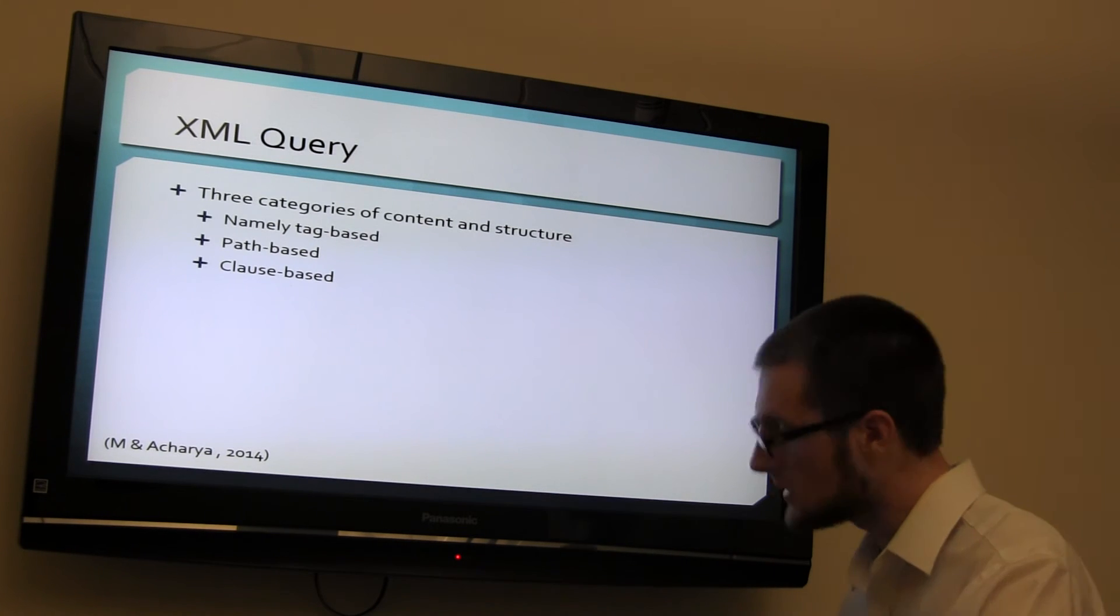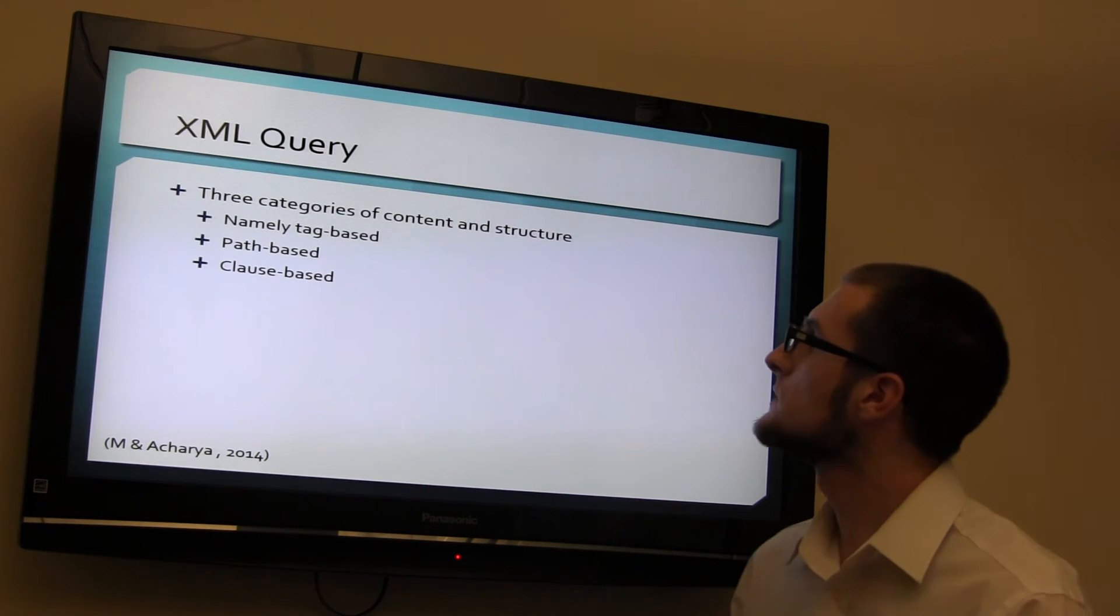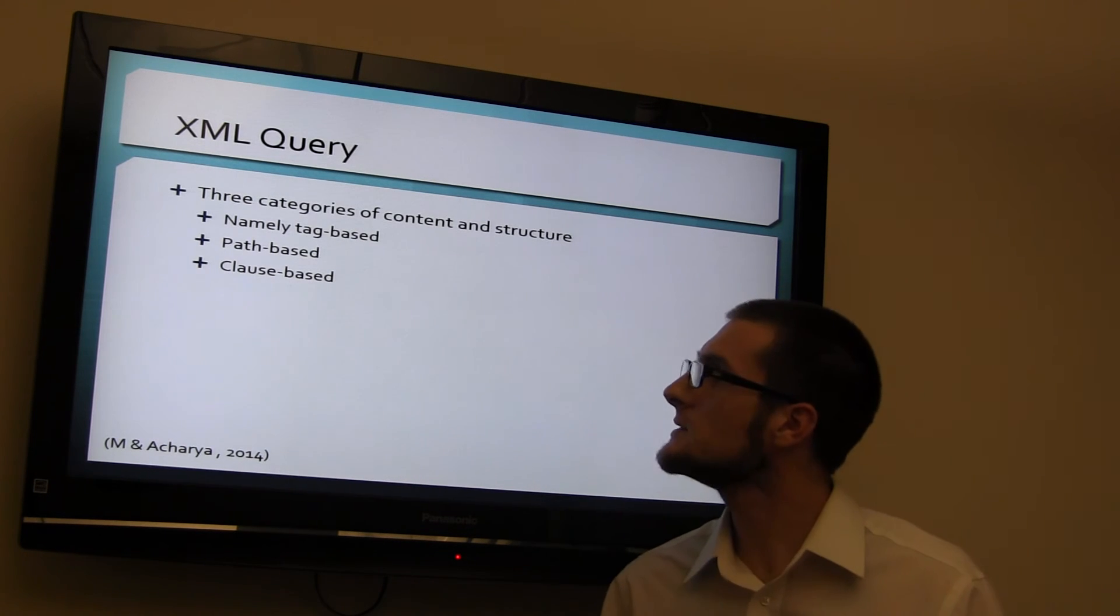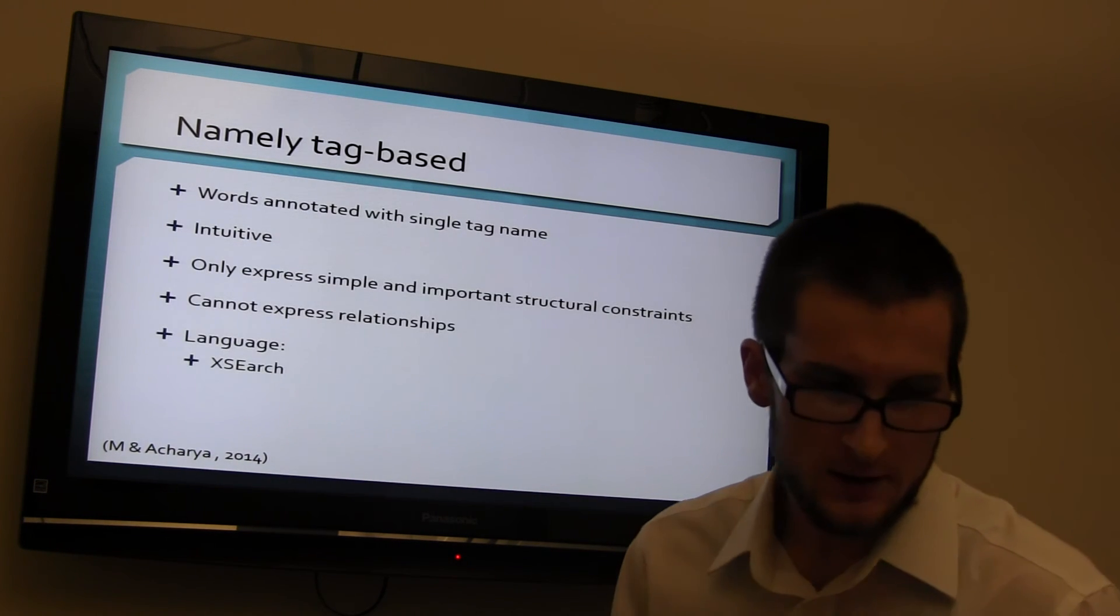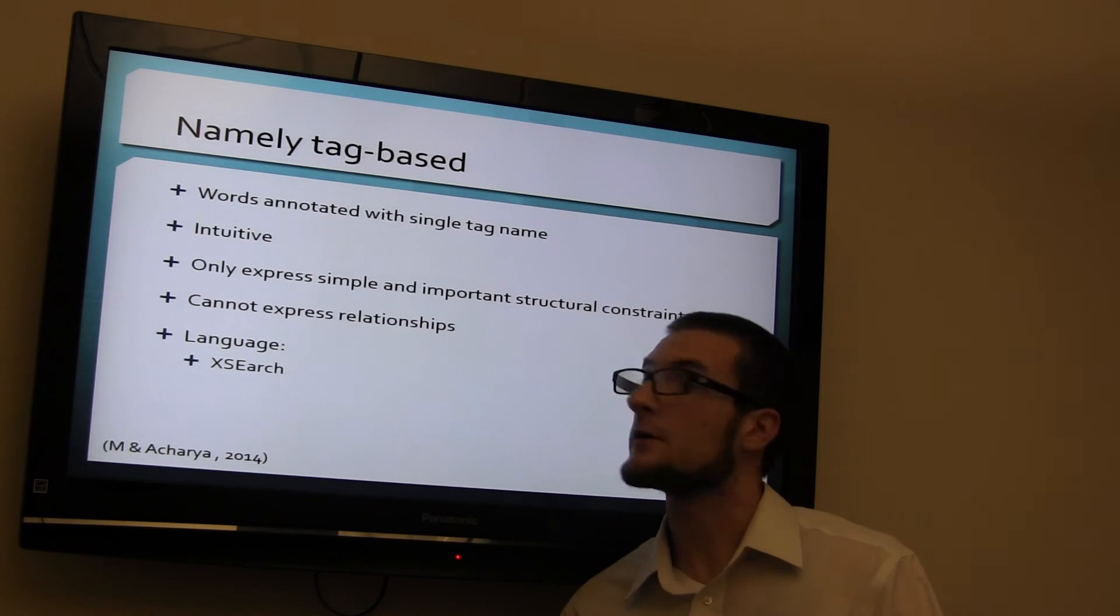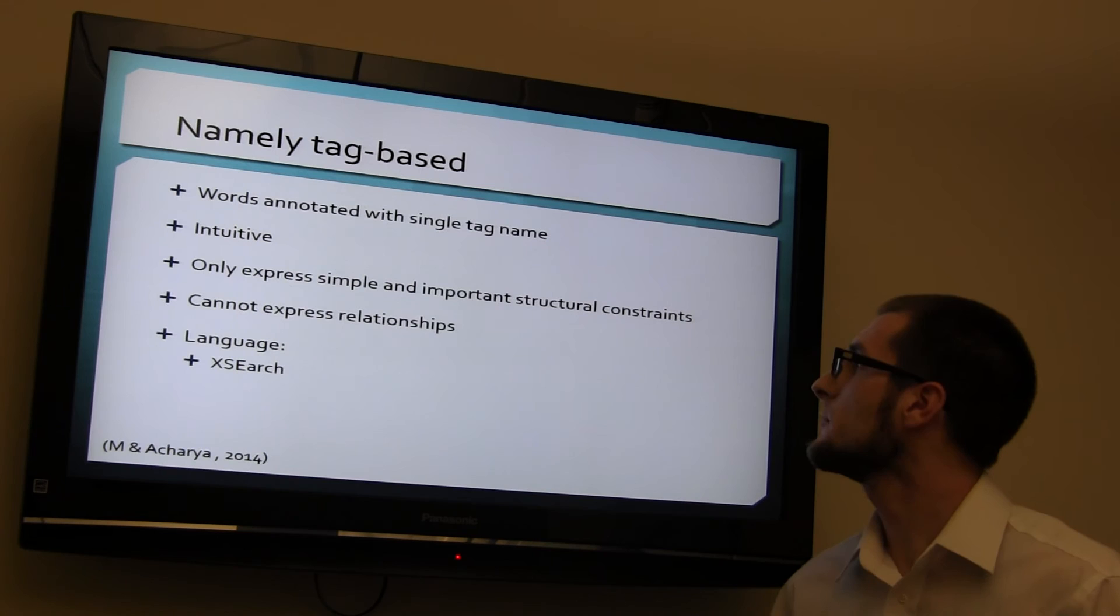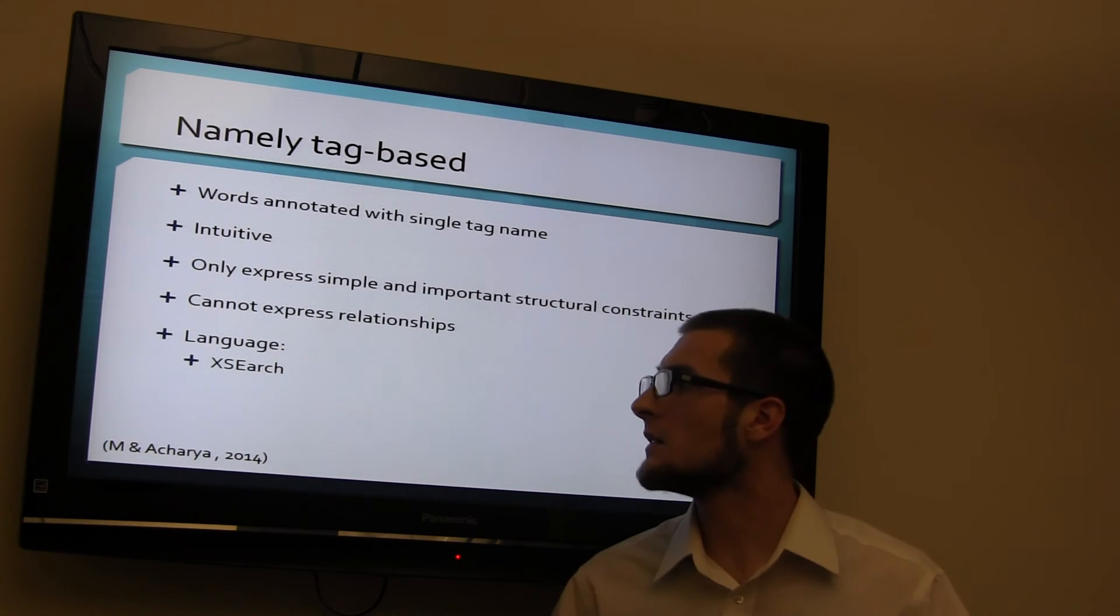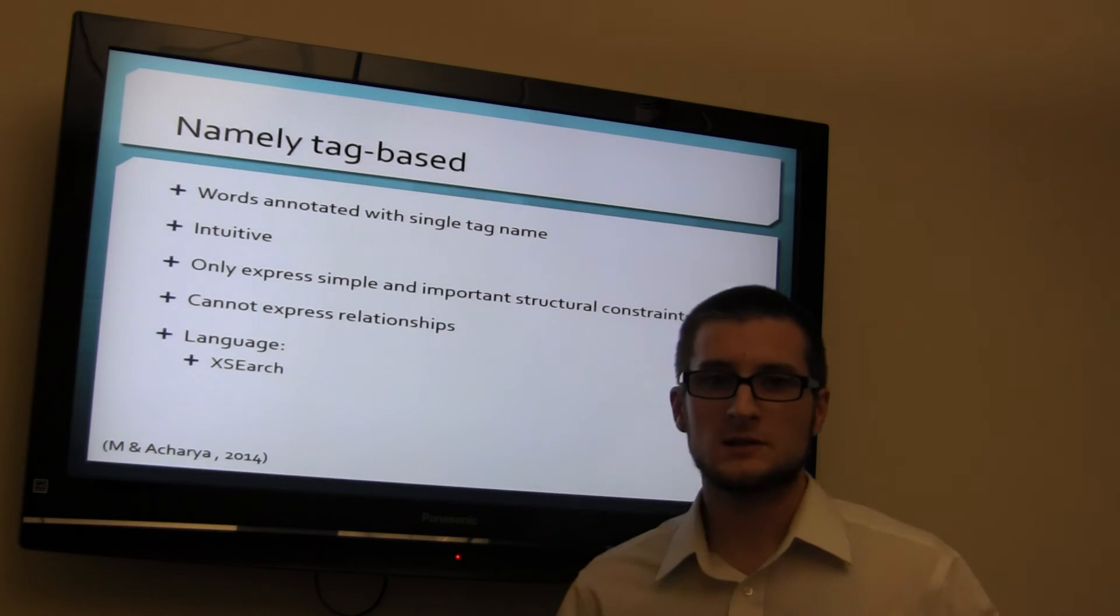A few other things quickly. XML query is, there's three categories, namely tag-based, path-based, and clause-based. Namely tags are words, annotated with single name tag. They're intuitive. They only express simple and important structural constraints. Cannot express relationships. The language for this is X-Search.